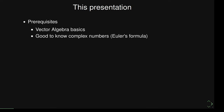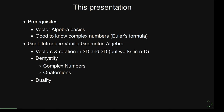What are we going to learn in this presentation? The prerequisites are very basic vector algebra — just what vectors are and maybe the dot and cross product. It's also good if you know complex numbers because we'll use Euler's formula. The goal is to introduce vanilla geometric algebra, the most basic form, and we'll cover vectors, rotations in two and three dimensions — which generalize to any dimension.